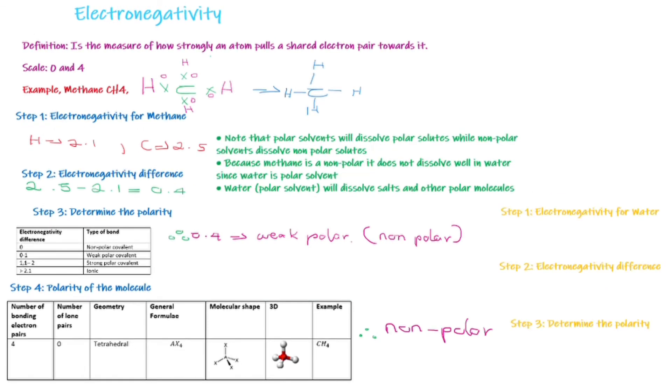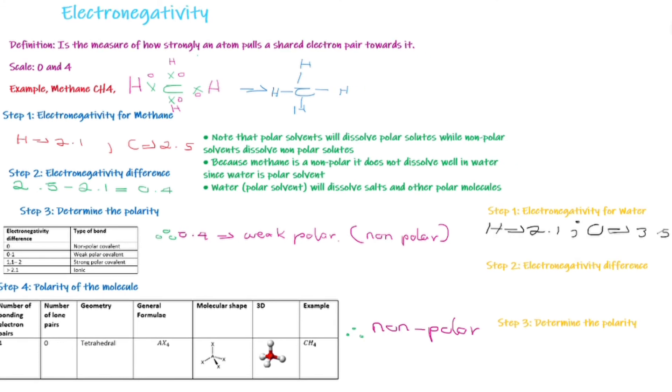We can also do the very same thing for water and determine its polarity. The first step will be to find the electronegativity of water, which should be 1.4. And if you go back to the table, it tells you that from 1.1 to 2, it is a strong polar solvent.